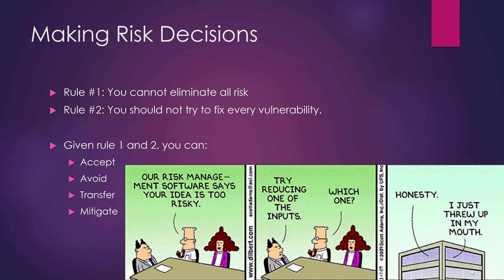We're now moving into that third step in the process where we're evaluating and making risk decisions. You can't eliminate all risk — you're not going to have enough money, people, time, or resources, and you can't fix every vulnerability. But what you can do is be structured, systematic, and thorough in evaluating those risks, and then make one of four decisions: accepting risk, avoiding risk, transferring risk, or mitigating risk.